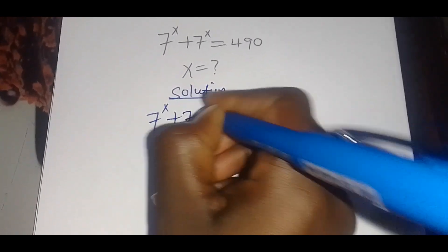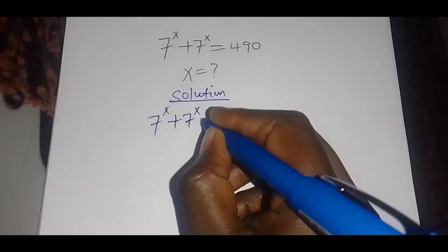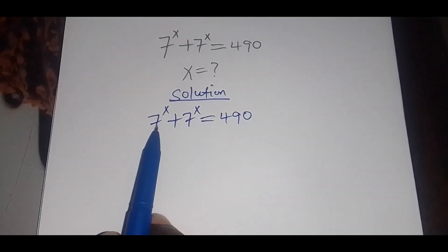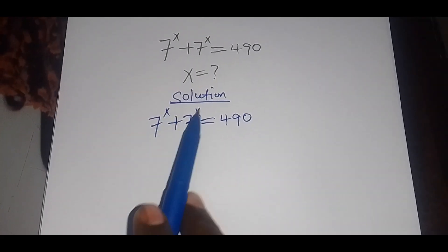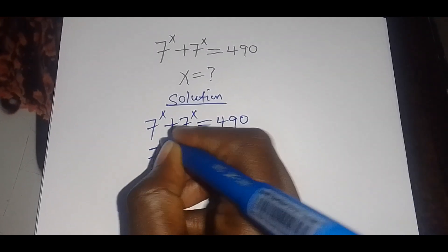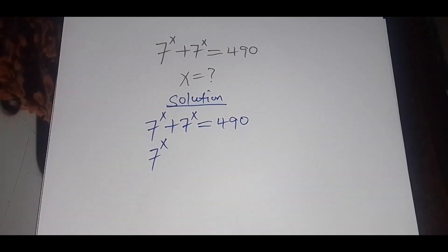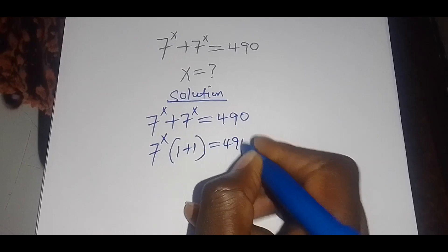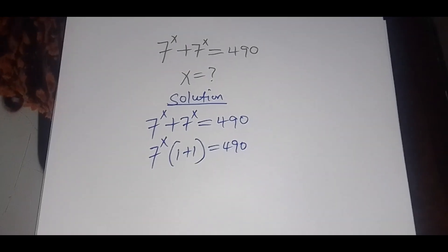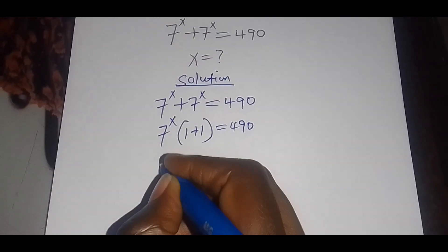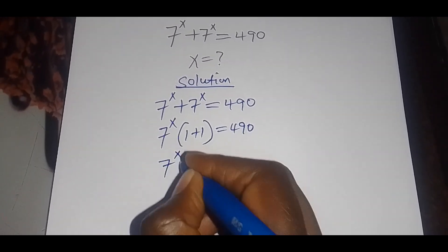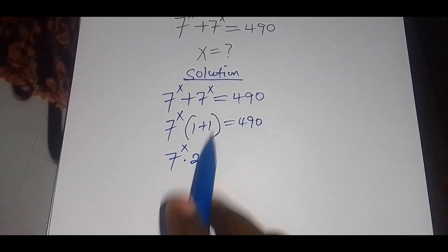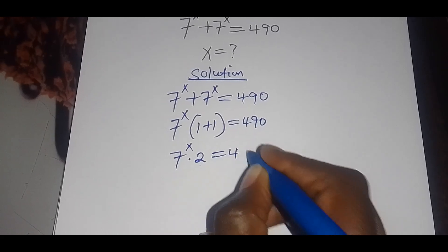So we have 7 raised to power x plus 7 raised to power x, this is equal to 490. Remember 7 raised to power x is common, so we factor out 7 raised to power x. So this is 7 raised to power x multiplied by (1 plus 1), this is equal to 490.